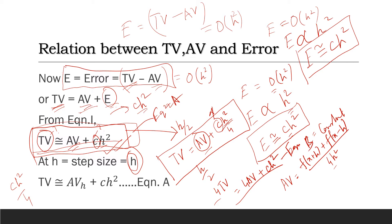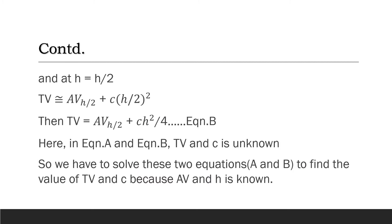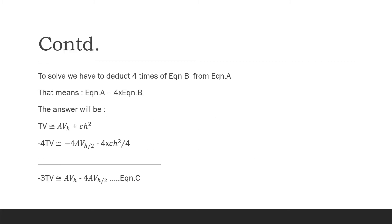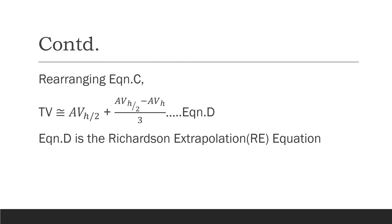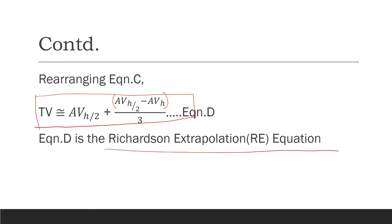In case of both equations A and B, the unknowns are C and the true value. So there are two equations and two unknowns — you can solve them. If you solve them by the elimination method and rearrange, you get: the true value equals the approximate value at the lower step size, plus the approximate value at the lower step size minus the approximate value at the higher step size, divided by three. This equation is known as the Richardson extrapolation equation — a method to find the true value of the solution.